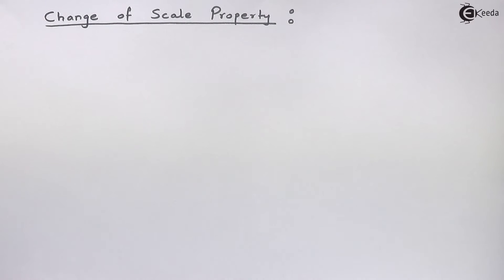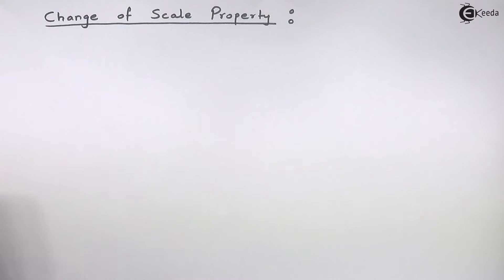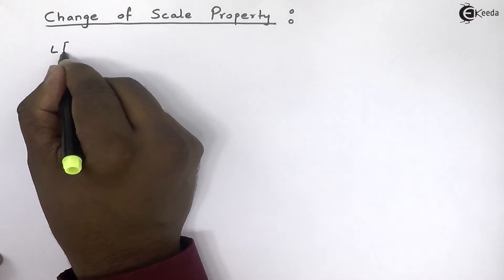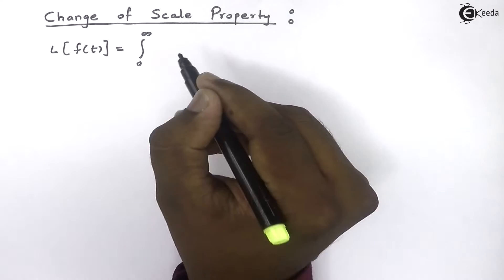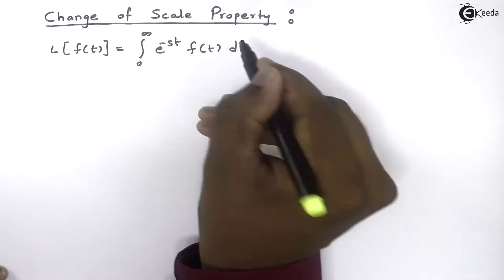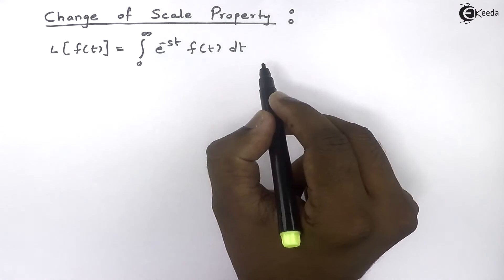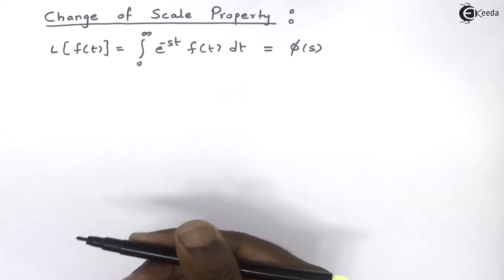Hi friends, let's understand one more property of Laplace transform called the change of scale property. The Laplace transform of any function f(t) is defined as the integration from 0 to infinity of e raised to minus st times f(t) dt, and when we evaluate this integration we get the answer as phi of s, that is some function of s.